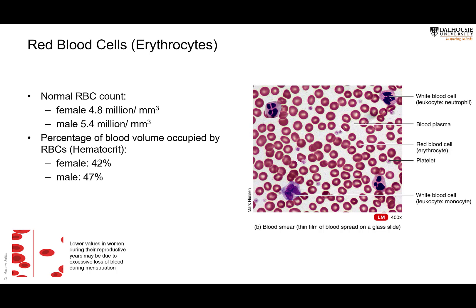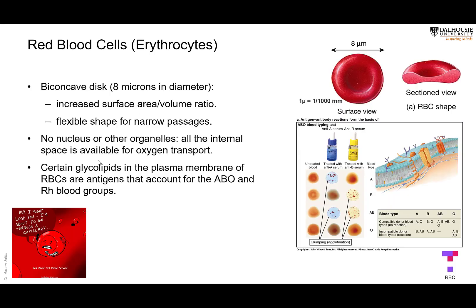A reduction in the number of RBCs or in the amount of hemoglobin they contain will reduce the oxygen-binding capacity of the blood, resulting in a condition called anemia — caused either by reduced RBCs or a reduced amount of hemoglobin.